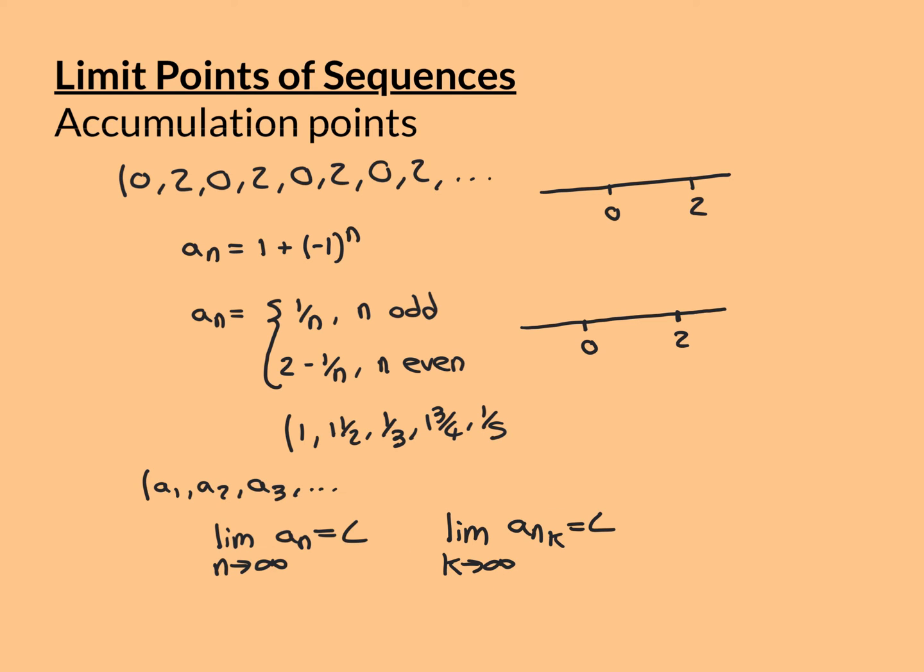To denote subsequences: the limit as k approaches infinity of a_{n_k} equals l. Here k varies over the natural numbers 1, 2, 3, ..., and for each k there is an n_k assigned. For k = 1 there is n_1, which is some term index in the original sequence — say 3. For k = 2 there is n_2, which must be strictly greater than n_1, so maybe 9, making a_9 the second term of the subsequence.